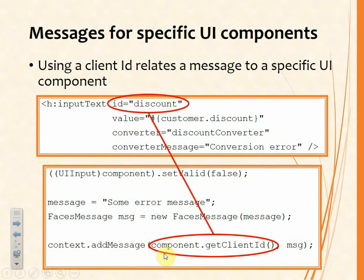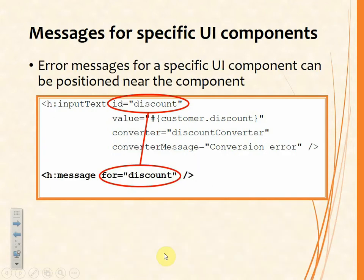The message may be associated with the component but it won't necessarily appear right next to it — that depends on what we do with the messages tag. You can see that the ID is used on the input tag. If we want to display a single message we can make use of the H:message element and use the for attribute on that element to link it to the input text with which it is associated. That means the message for that UI component with that ID will appear at that point in the facelet, if such a message exists.